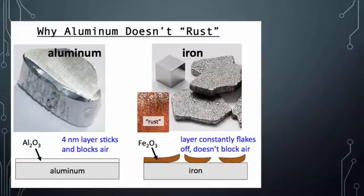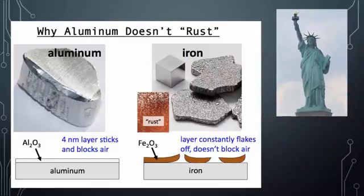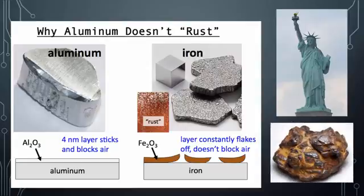Looking at aluminum versus iron: aluminum makes a 4-nanometer layer that blocks out air, so it has its own natural way of protecting itself. Unlike iron, which when it oxidizes makes a crumbly, rusty flaky layer — if you rub your hand against a rusty fence, you get rust on you because it flakes off. Other things that have been oxidized include the Statue of Liberty, hence its blue-green color. Meteorites from outer space immediately start to oxidize when they enter our atmosphere, causing chemical reactions that change the configurations and formulas of the elements inside.